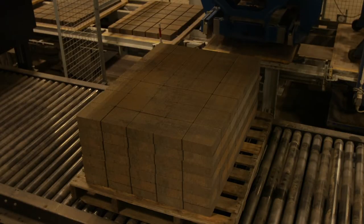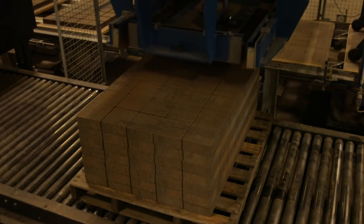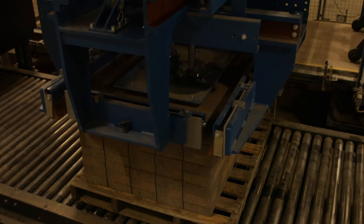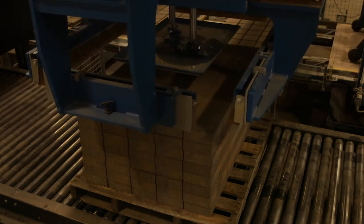Pallet layers then enter the cubing system where they are neatly stacked on a wood pallet. A pallet tag is placed on the side which indicates the type of product and its color.